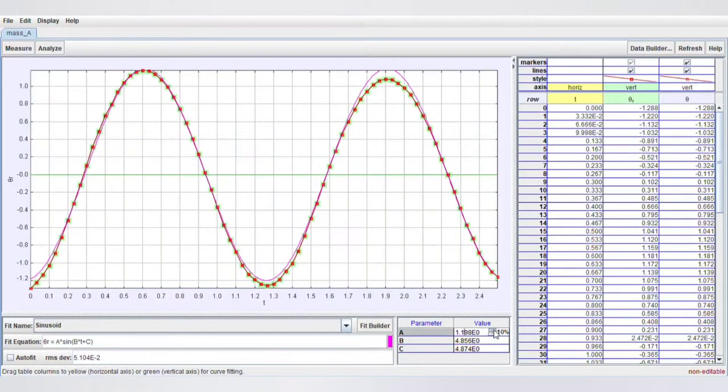And here on the side, we can fudge the numbers until our purple lines match with the actual graph. And those are the actual numbers that we know will fit this function over here. And once we have those numbers, we can find the derivative and find the angular velocity.